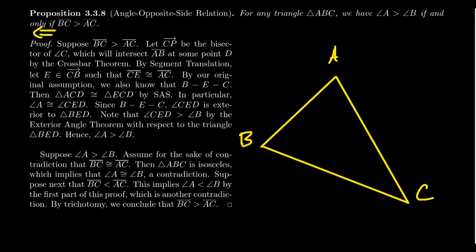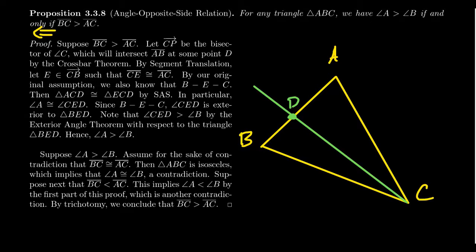We're going to take the bisector CP — take angle C and cut it in half. We know angle bisectors exist by what we've proven previously. The angle bisector would look something like that. Since it's an interior ray to angle ACB, by the crossbar theorem it will intersect at some point — we'll call that point D. Because this is an angle bisector, we know that angle ACD is congruent to angle BCD. That's the whole point of using the bisector.